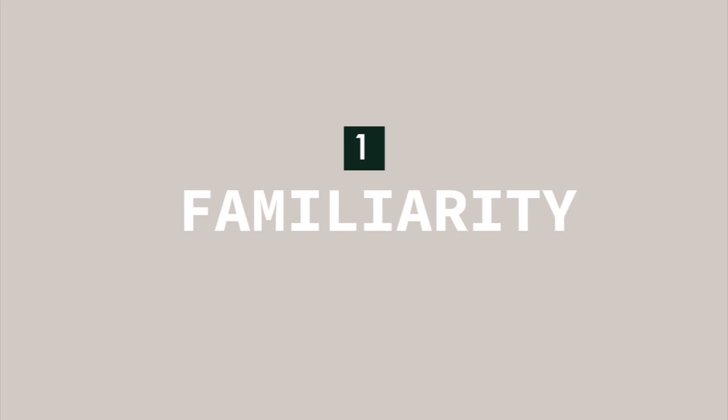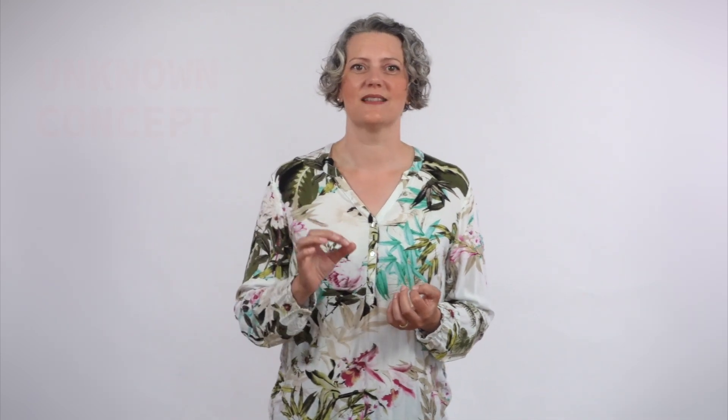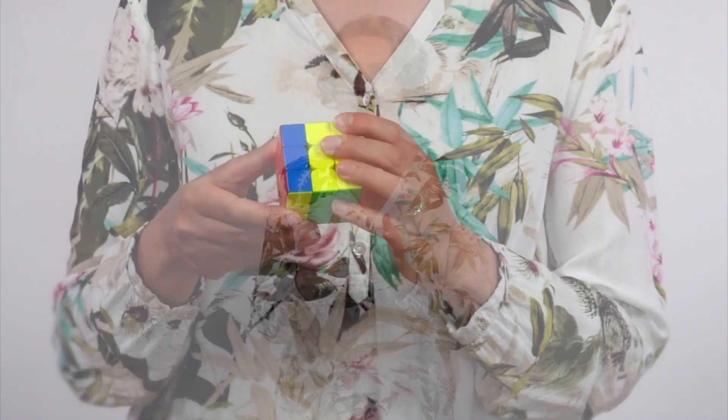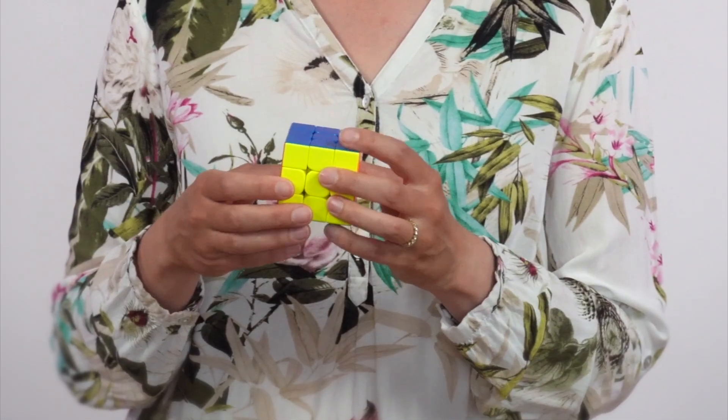The first stage is familiarity. Before you get here, you had no idea that this was even a thing. If you're at the familiar stage with a Rubik's Cube, then you've seen a cube, you've held it in your hands, you can twist the layers and you can move the pieces around. Just that.